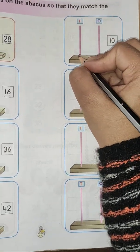Next one is 24. In place of ones, number is 4, and in place of tens, number is 2. So in ones, we draw 4 beads: 1, 2, 3, 4. And in place of tens, we will draw 2 beads.